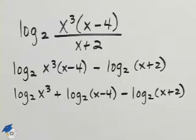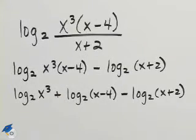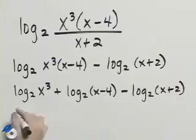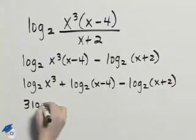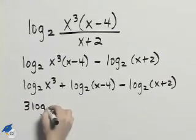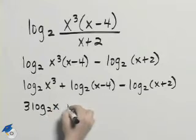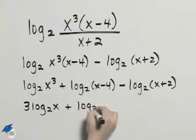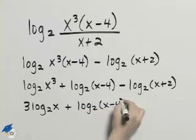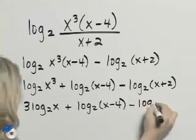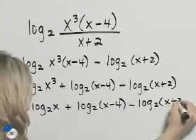The final property we can use is to deal with this exponent. The property says that we can bring that exponent out in front of the log. We'll have 3 log base 2 of x plus log base 2 of x minus 4 minus log base 2 of x plus 2.